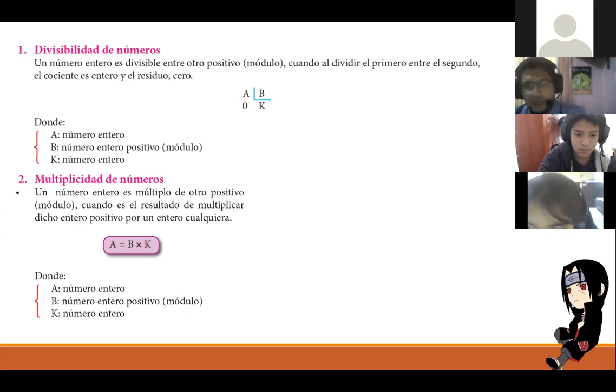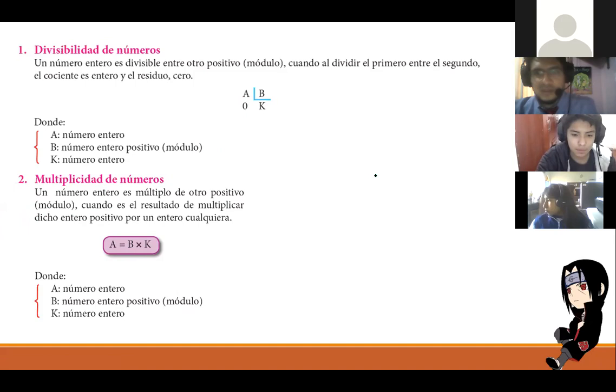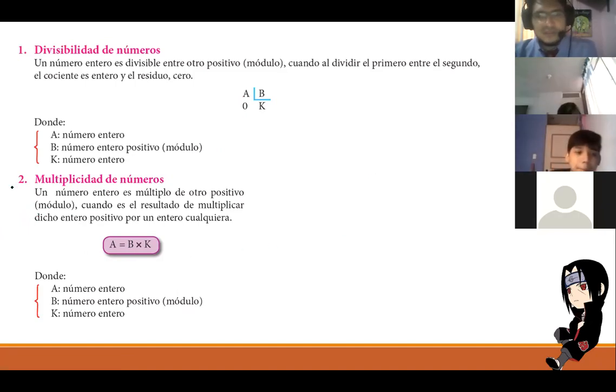Ahora, multiplicidad de números. Pinedo, Víctor. Lo puedes leer, por favor? Ok. Ya, otra persona, a ver. Gonzalo. Sí, profesor. Multiplicidad de números. Puedes leerlo, por favor? Un número entero es múltiplo de otro positivo módulo, cuando el resultado de multiplicar dicho entero positivo por un entero cualquiera. Es lo mismo que la divisibilidad, solo que ahora estamos multiplicando. El B por K, el divisor por el cociente. Y prácticamente es lo mismo.